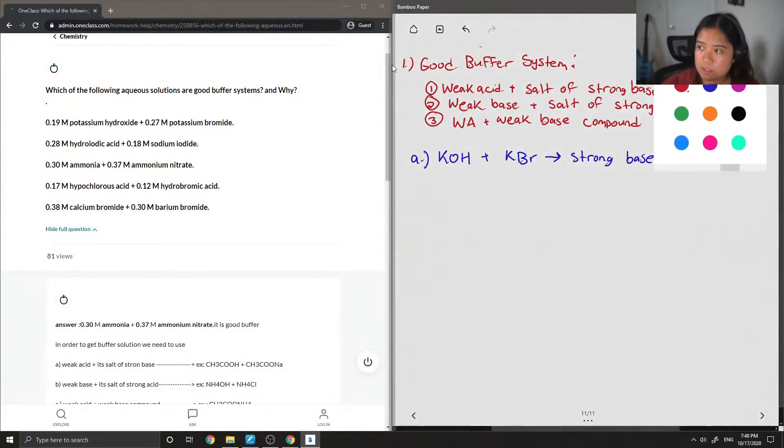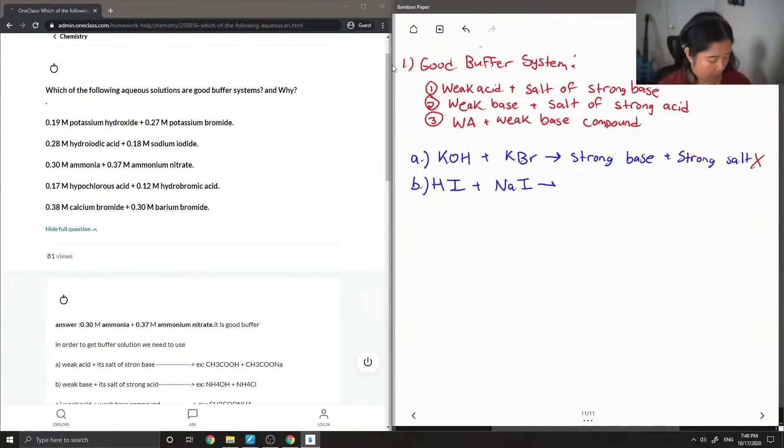So let's look at hydroiodic acid plus sodium iodide. So the hydroiodic acid is an example of a strong acid. But again, the sodium iodide is an example of something that would also give off two strong salts. So we can't use that as a buffer either.